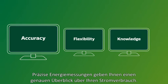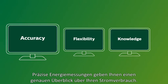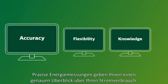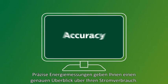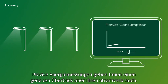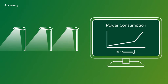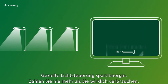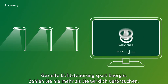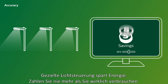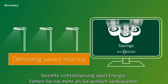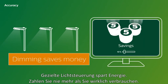Accurate energy metering gives you a precise overview of your system's power consumption. Targeting light levels saves energy. If your street lights consume less energy, you save more money.